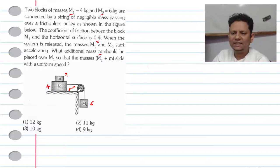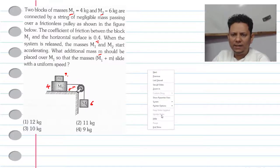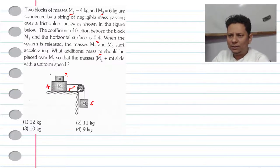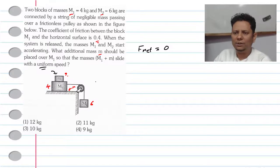In this case, you have to place mass m so that the blocks move with uniform speed. For uniform speed, the acceleration should be equal to zero, and the net force on m1 should be equal to zero.